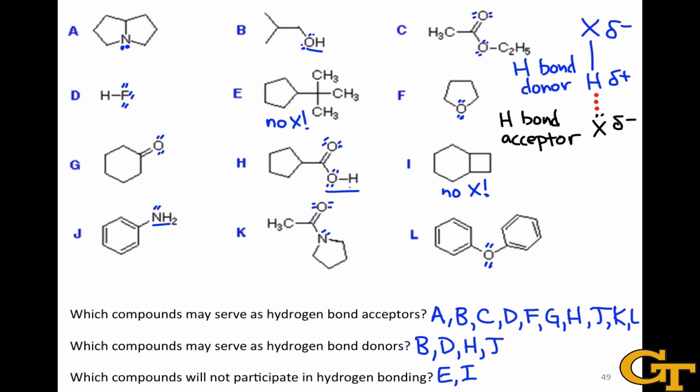Hopefully running through these examples has shown you that as long as we can identify lone pairs and X-H bonds within molecules, it's fairly straightforward to identify molecules that can hydrogen bond and can serve as either hydrogen bond acceptors with lone pairs or hydrogen bond donors with X-H bonds.